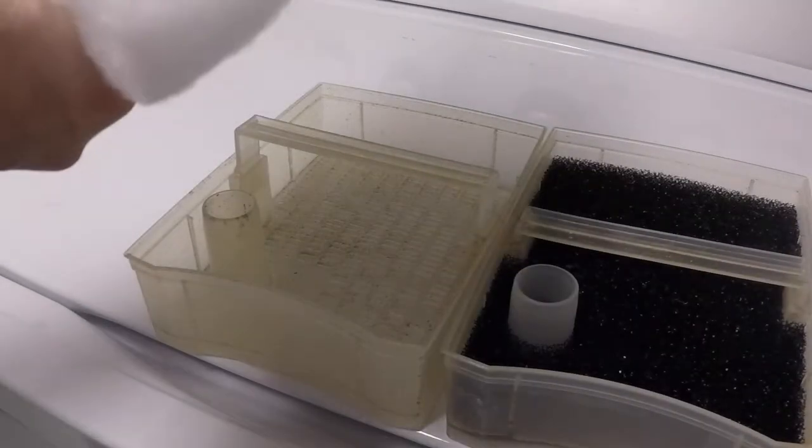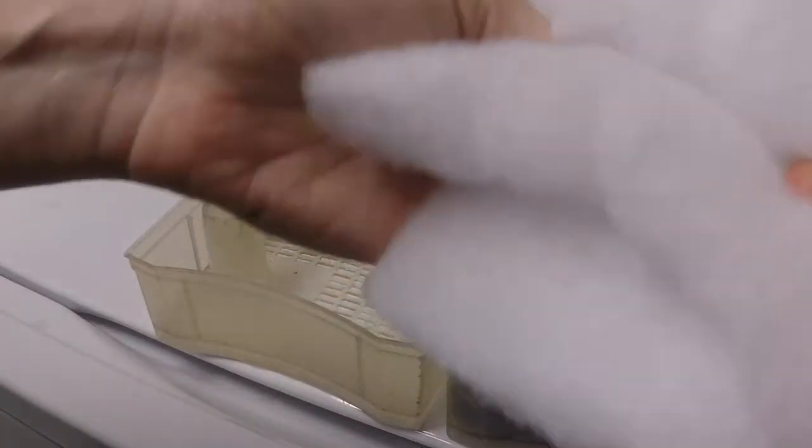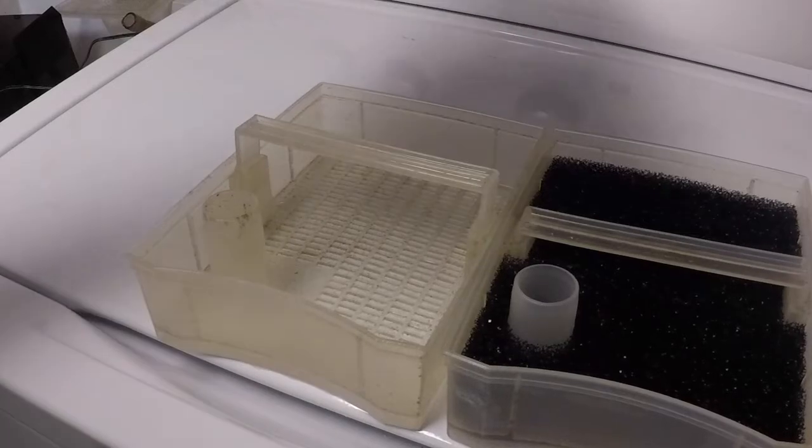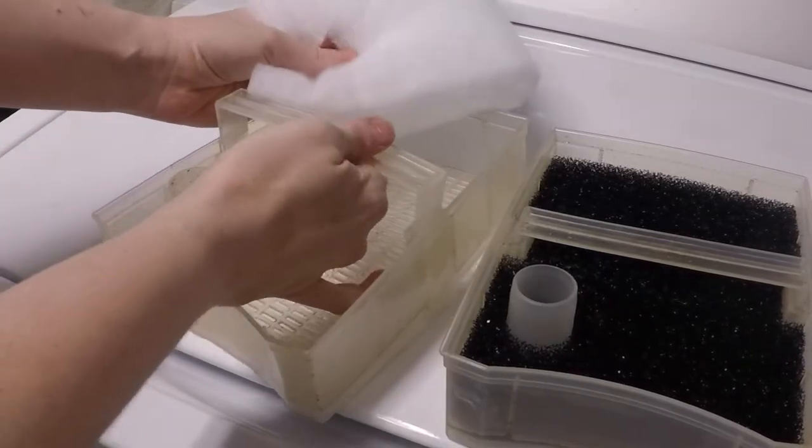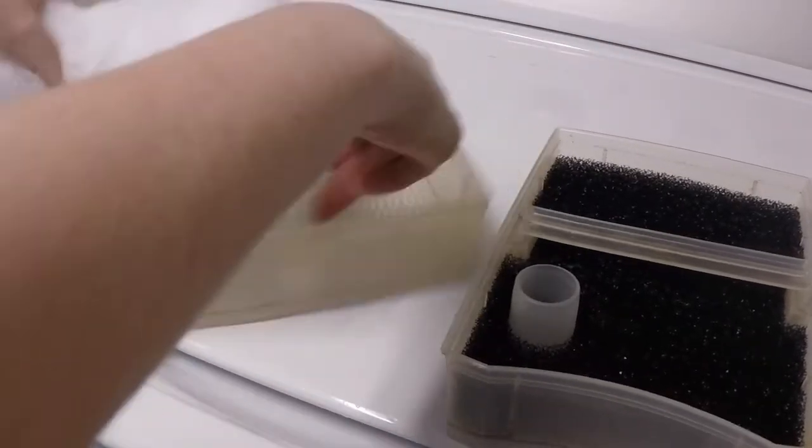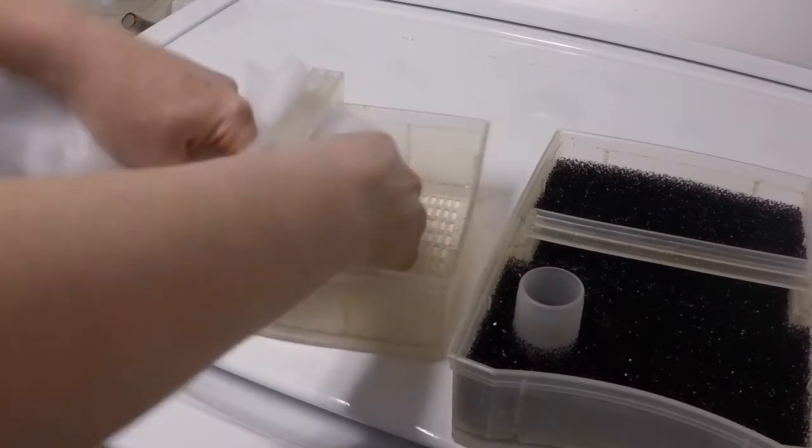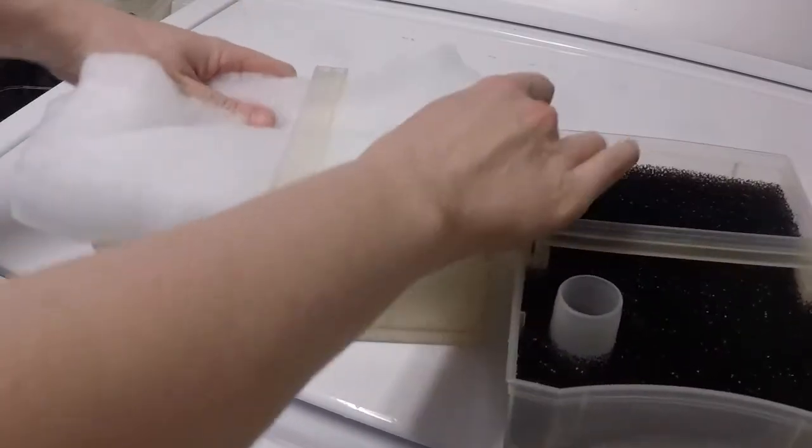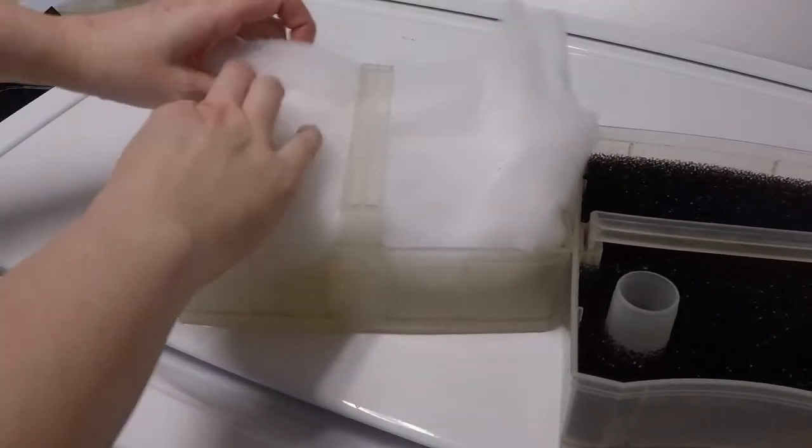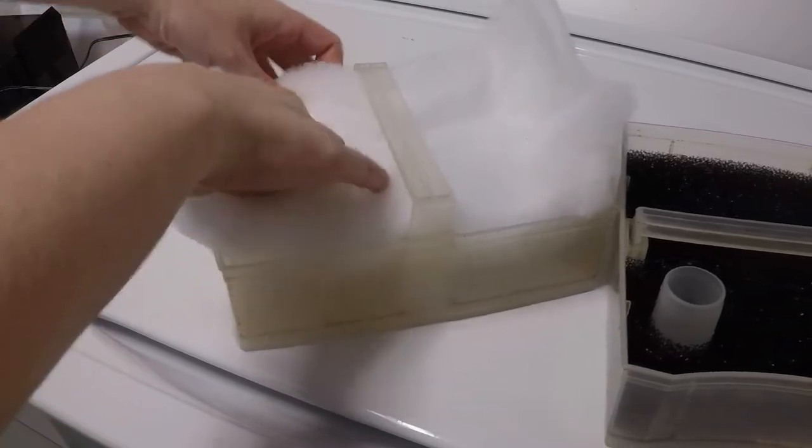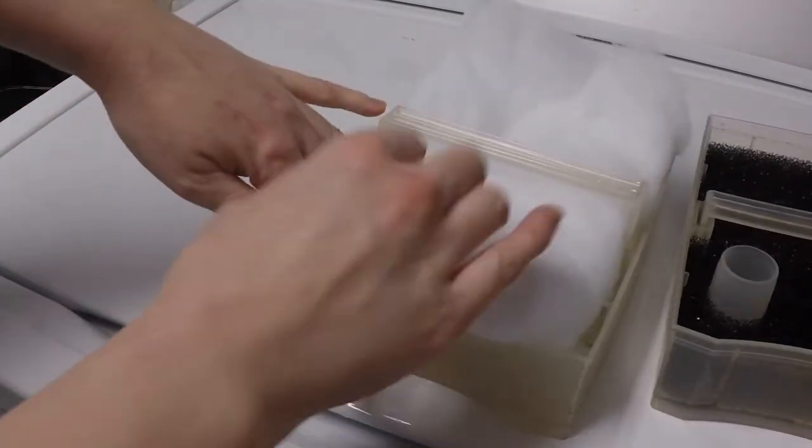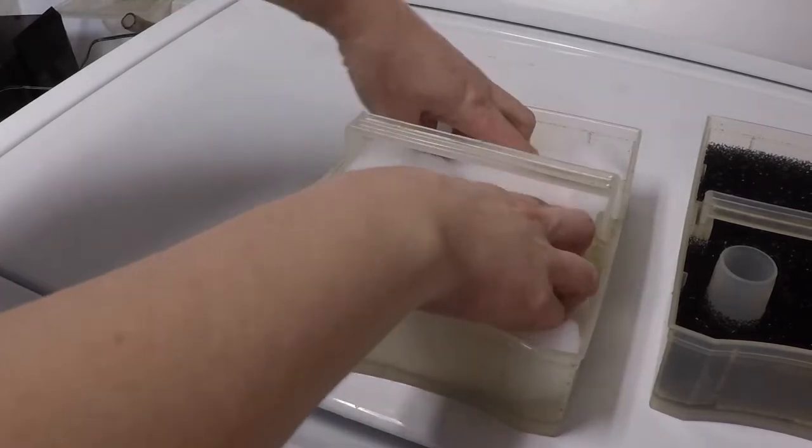Then rip a hole so it fits over the intake. So it fits over the intake and then just slide this puppy in here and put that over the hole like that, shove it all in.